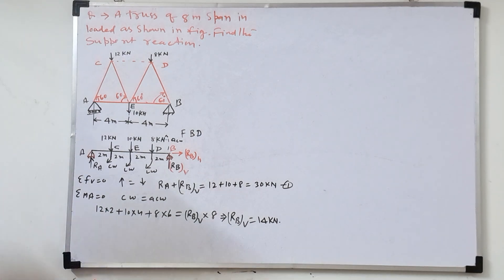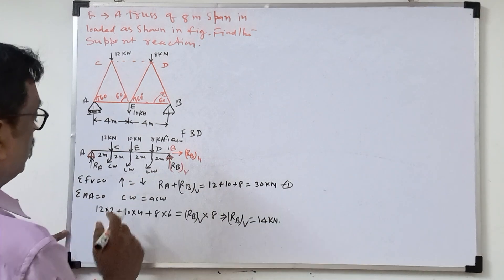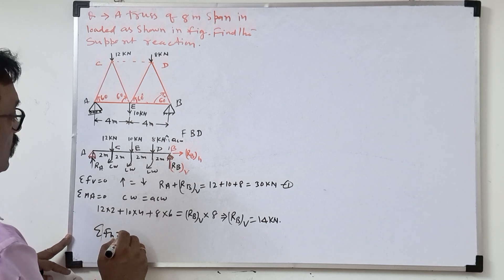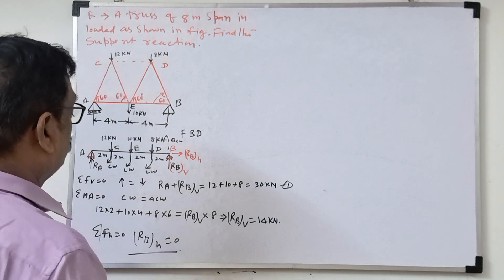So then sigma FH. So if we'll take the horizontal force, Sigma FH is equal to 0. So that means RBH is equal to 0.